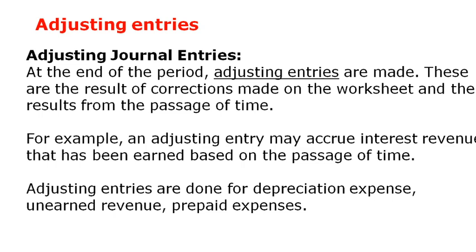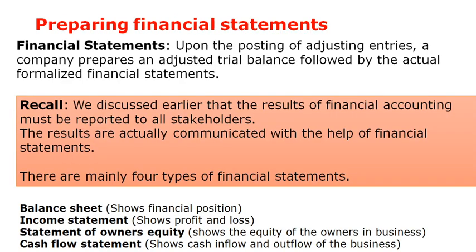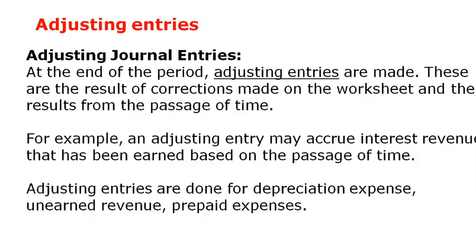After making adjusting entries, you prepare the trial balance once again — this is called the adjusted trial balance. The initial trial balance tests whether your general journal and general ledger records are correct. The adjusted trial balance then re-tests whether the adjusting entries you have made are correct or not.